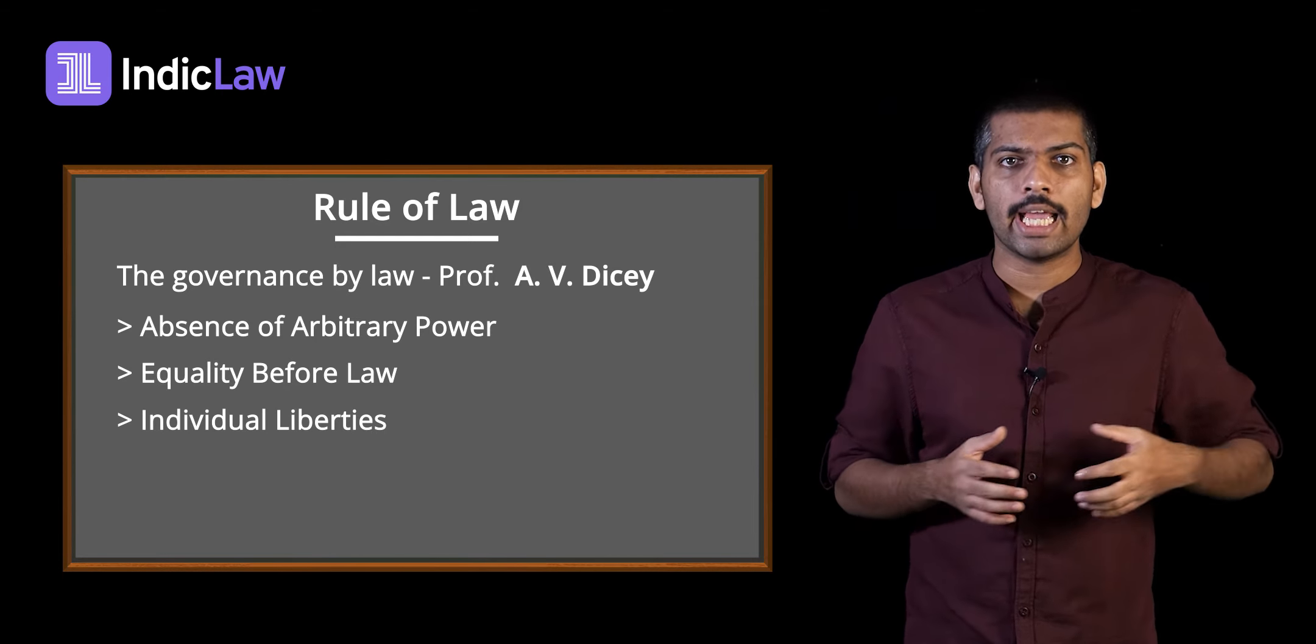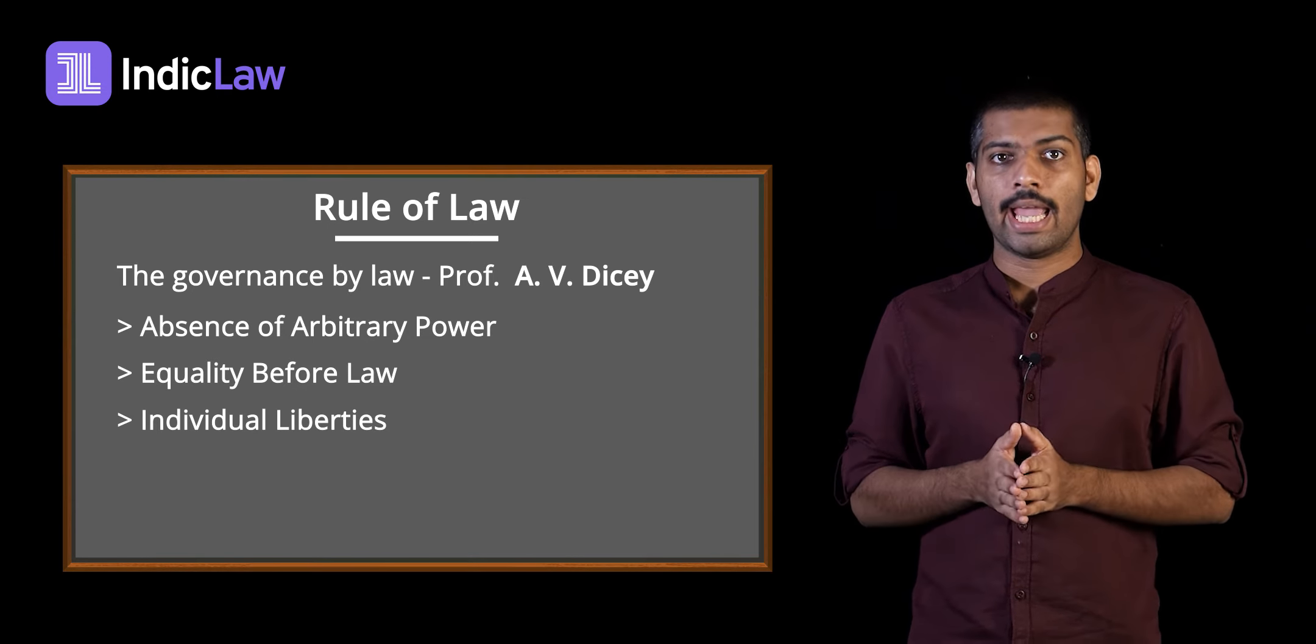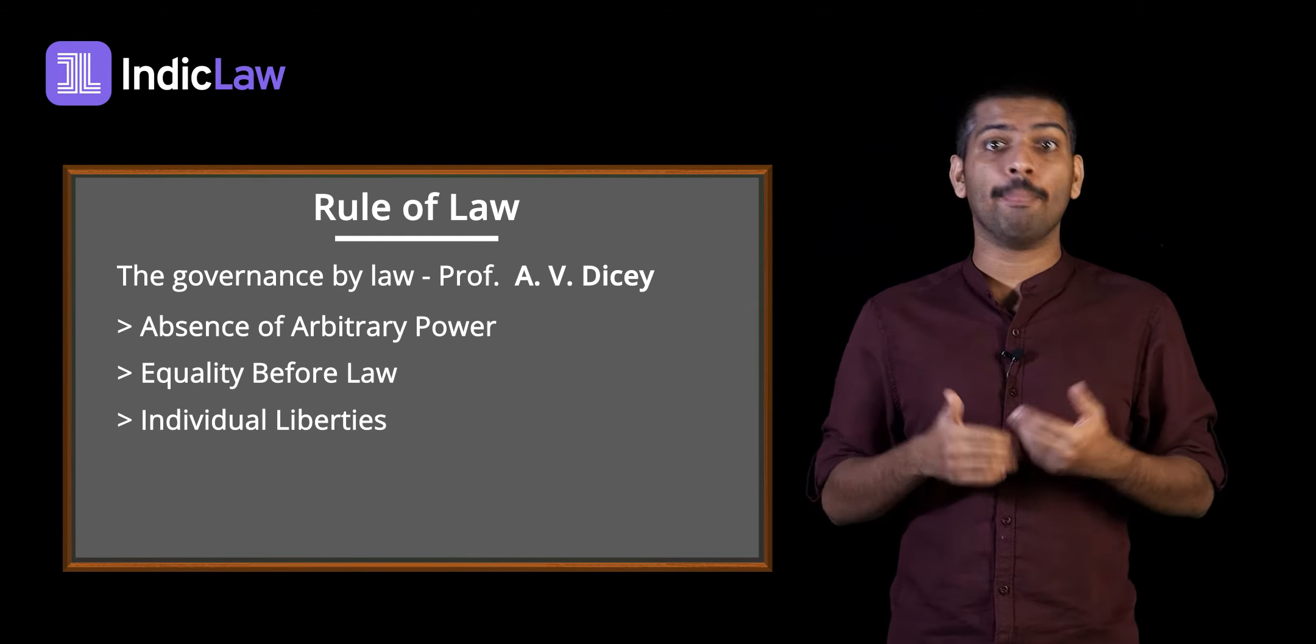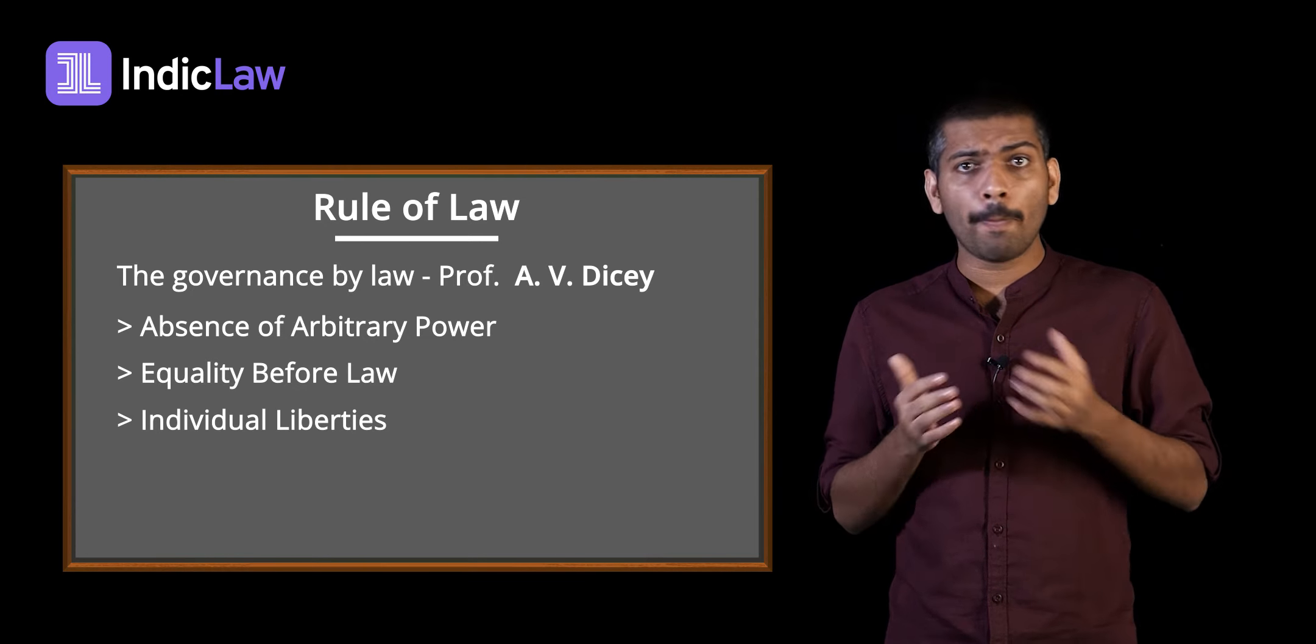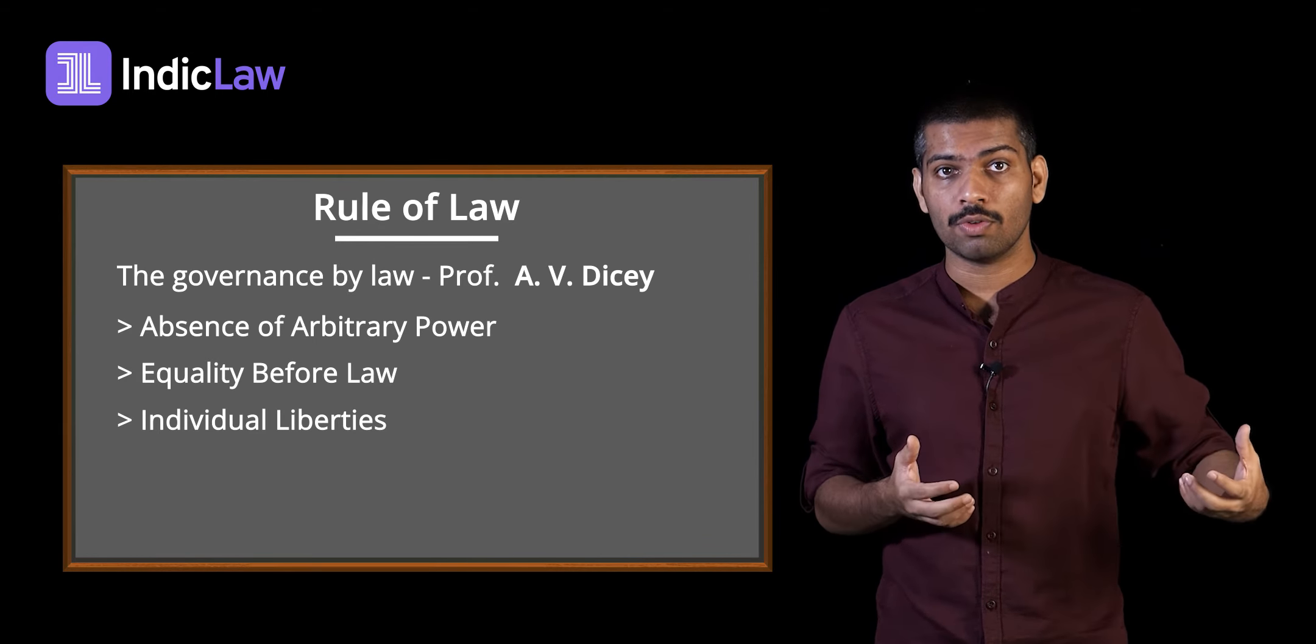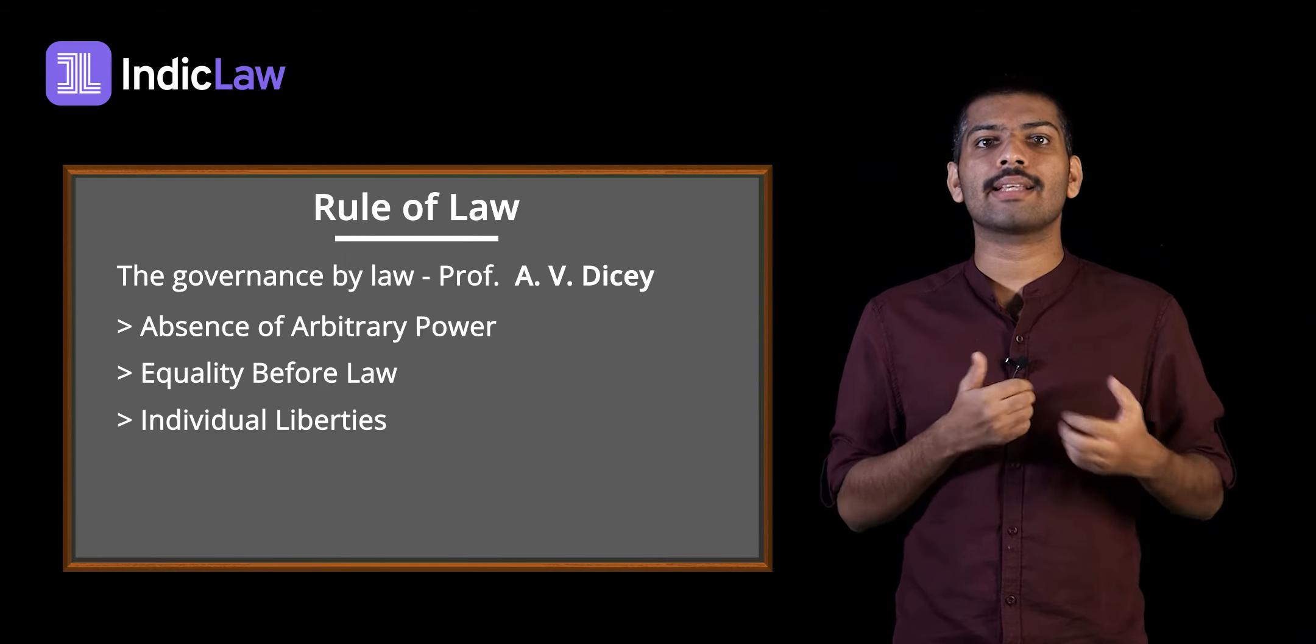Let us closely explore what each of these facets means. The first one: Absence of Arbitrary Power. In simple terms, it means that no person is above the law. As a corollary, it also means that no person can be punished for anything that is not unlawful. Dicey believed that in a system that is not bound by Rule of Law, there exists the possibility of arbitrariness in exercise of power.